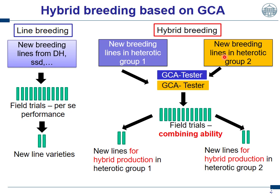Because at the end, a hybrid is nothing else than a combination of two input lines. You produce new lines in group 1, but you cross them to a tester representative for heterotic group 2 and bring them to field trials, where you examine the hybrids. What you are interested in is the general combining ability of lines from each group, and you select your lines based on combining ability — that is the big difference. The target trait is the general combining ability, not the line per se performance.